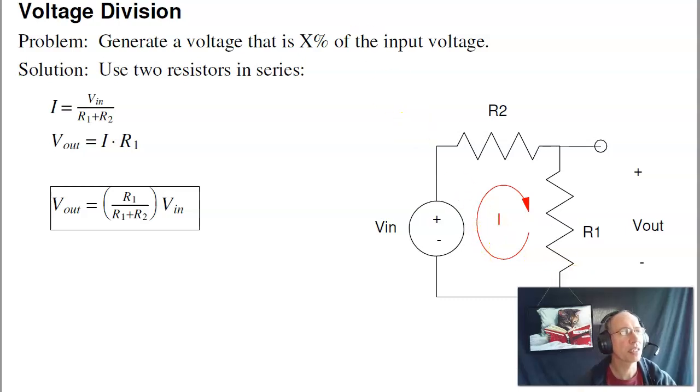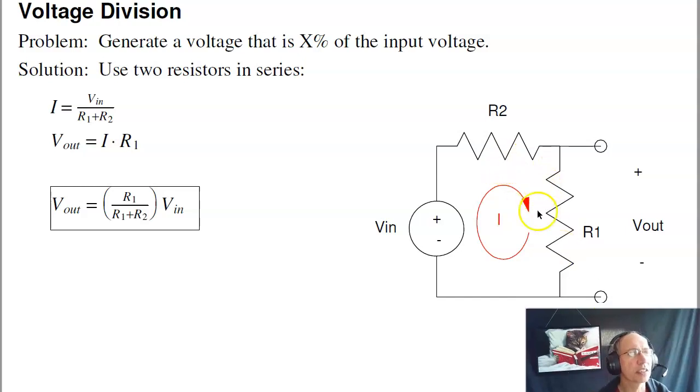The idea behind Voltage and Current Division is that given a circuit like this, the voltage at the output will be less than the input voltage. I can see that just by conservation of voltage. The voltage across R2 plus the voltage across R1 has to add up to Vin. So Vout is less than or equal to Vin.